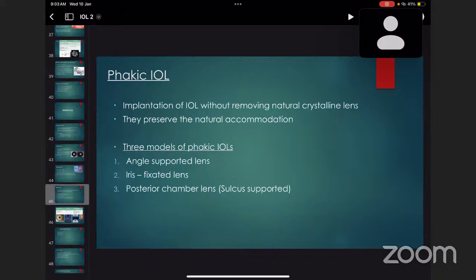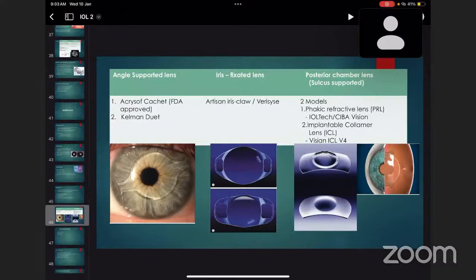Phakic IOL: implantation of intraocular lens without removing natural crystalline lens, known as phakic IOL. They preserve natural accommodation. Three models of phakic IOL are available: angle-supported lens, iris-fixated lens, and third is posterior chamber lens that is sulcus-supported. Angle-supported lens is the AcrySof Cachet which is placed in the angles. Iris-fixated lens: these are Artisan iris claw or Verisyse lenses.